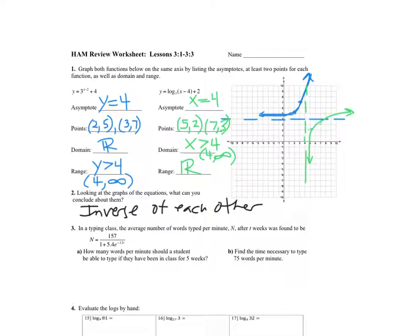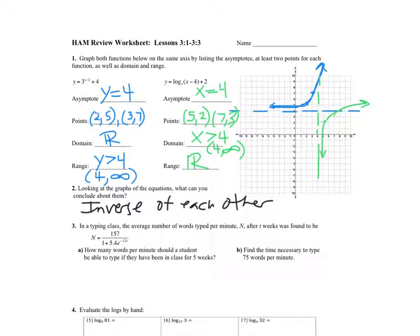The reason why, as you can look at it, everything is switched. Here, the asymptote is y equals 4. Over here, it's x equals 4. All the x's and y's have been switched. Even those points that we found. Even domain and range.